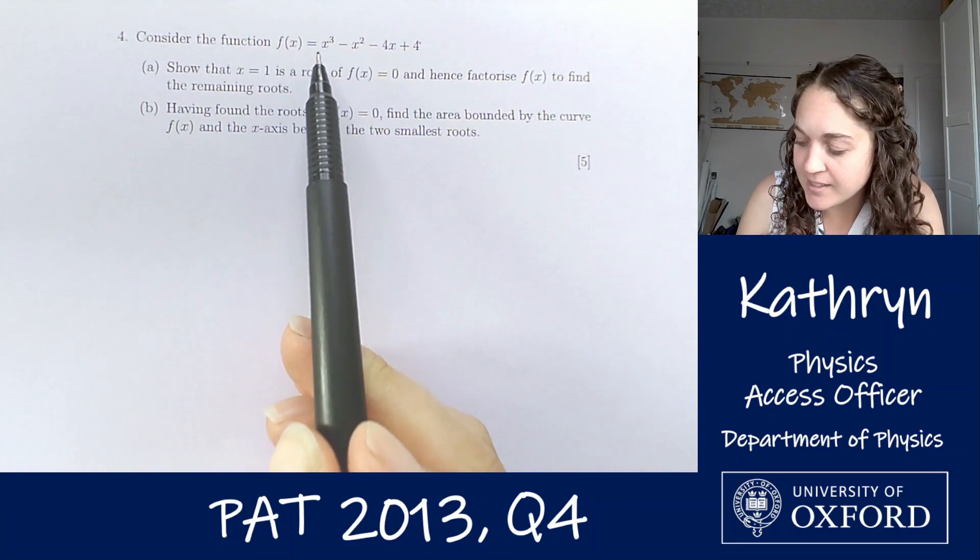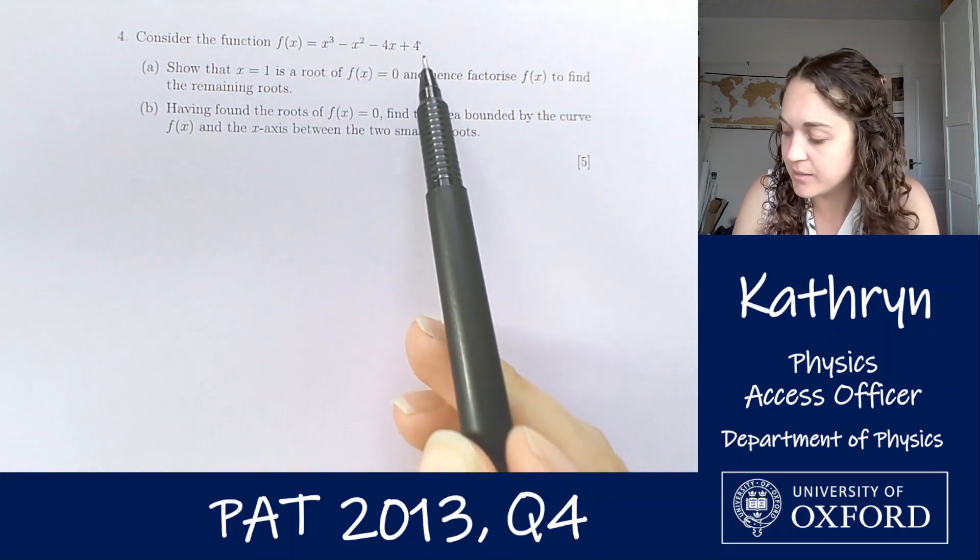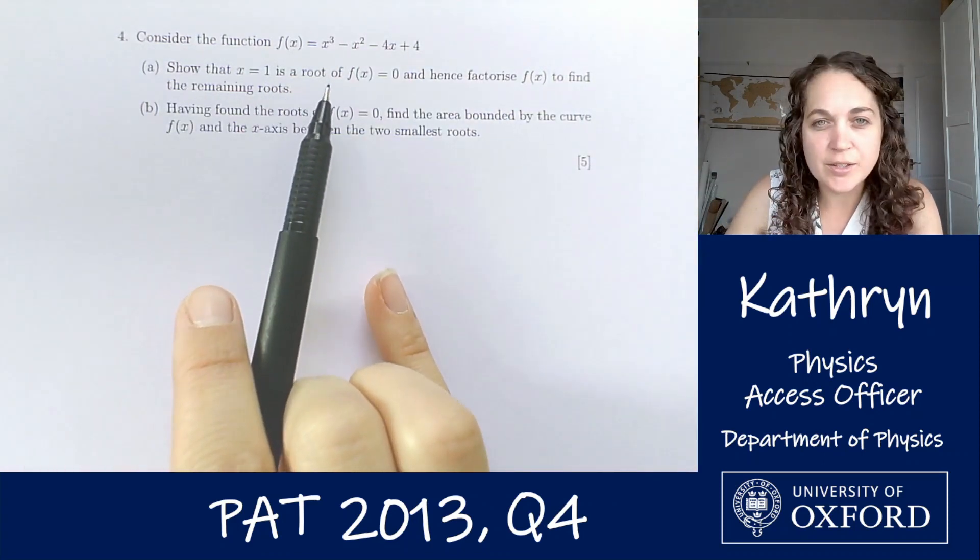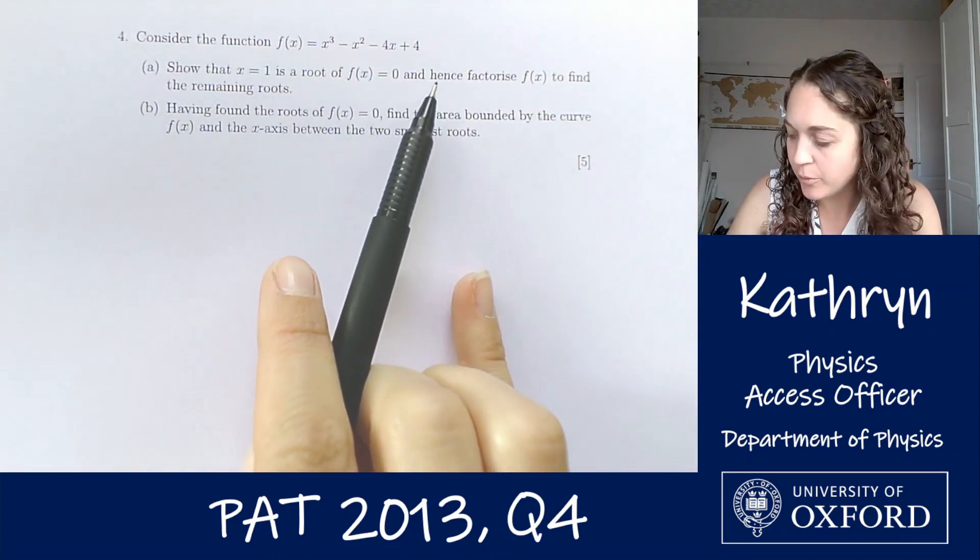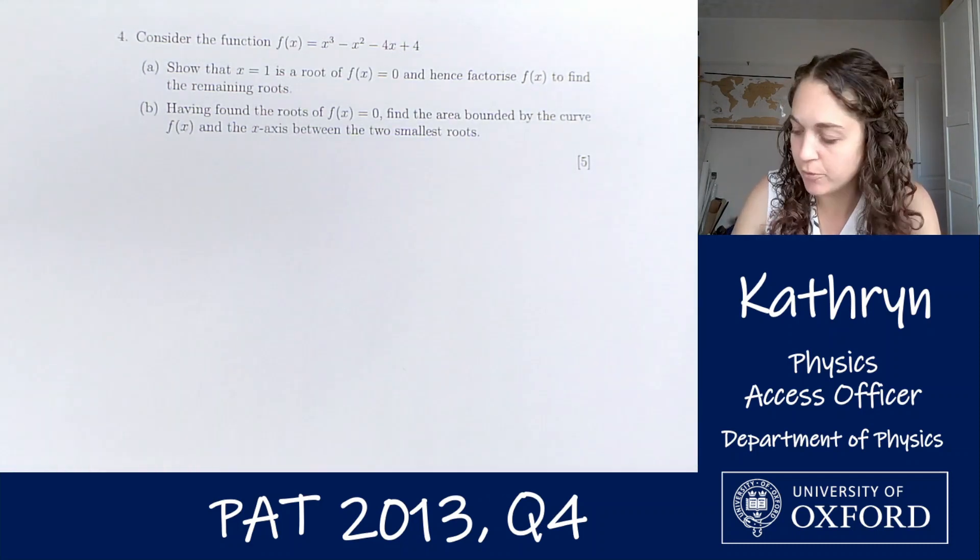Consider the function f(x) equals x cubed minus x squared minus 4x plus 4. Part a says show that x equals 1 is a root of f(x) equals 0 and hence factorize f(x) to find the remaining roots. Let's do part a before we look at part b.